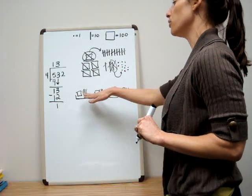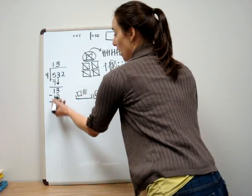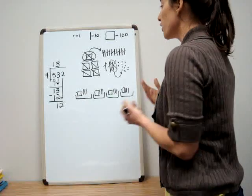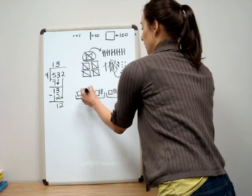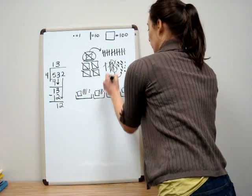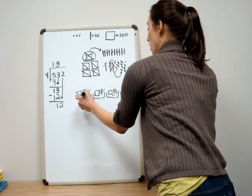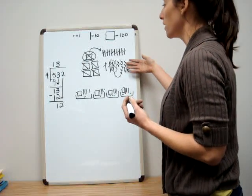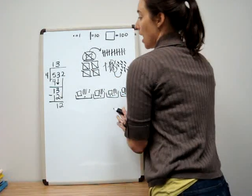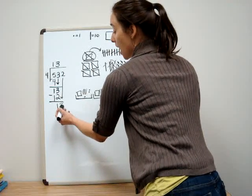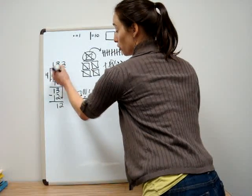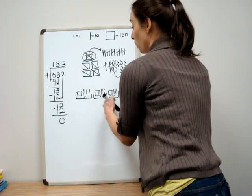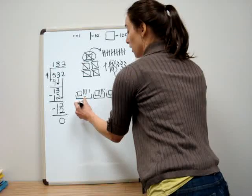Now I have more than enough ones to divvy up in my groups. That one ten I had is combined with the two ones, giving me twelve ones altogether. I'll divvy them up, putting two at a time, and I have enough to put three in each group with none left over — no remainder. In the division algorithm: I have twelve ones, divide them into four groups, that's three in each group. Four times three is twelve — I use them all up. My blocks show me that in each group I have one hundred, thirty, and three — so 133.